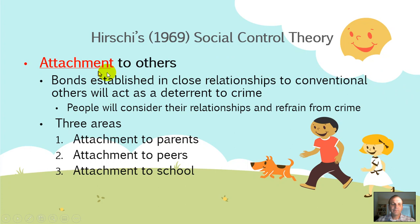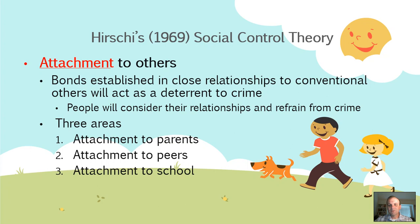Attachment refers to attachment to others. Bonds established in close relationships with conventional others will act as a deterrent to crime — people will consider their relationships and refrain from committing crimes. All the bonds you have with your family, parents, grandparents, brothers and sisters — think about them instead of going out and robbing a bank or selling drugs. What would your parents or grandma say? That includes friends, coworkers, and school peers when we're talking about youth and delinquency.